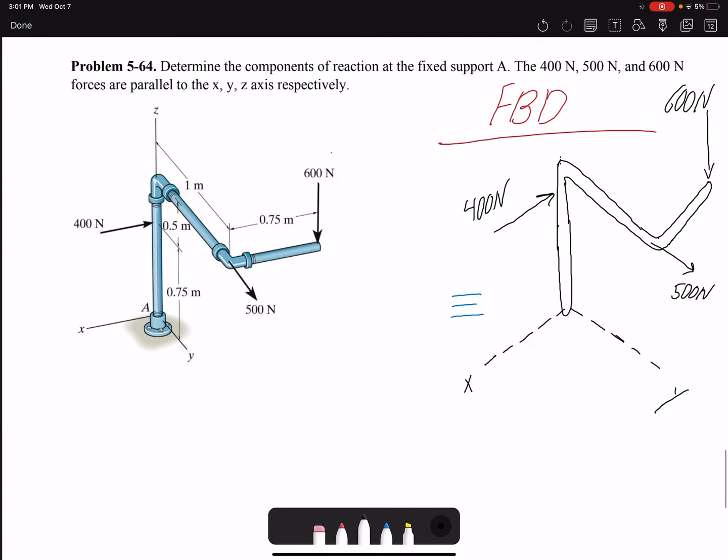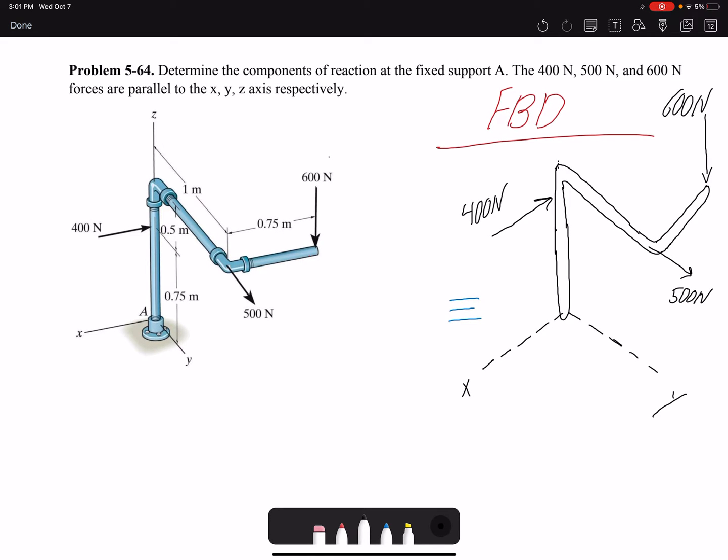Hello everyone, in this video I'm going to solve problem 5-64. Determine the components of reaction at the fixed support A. The 400N, 500N and 600N forces are parallel to the x, y, z axis respectively.